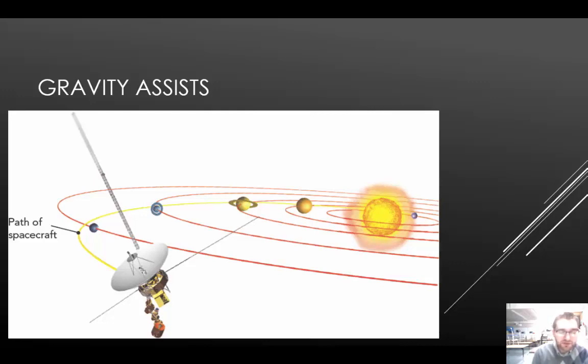If a space probe comes close to a planet, the planet's gravity changes the probe's path. Engineers plan space missions to take advantage of these gravity assists. A gravity assist can shorten the probe's interplanetary trip by many years.